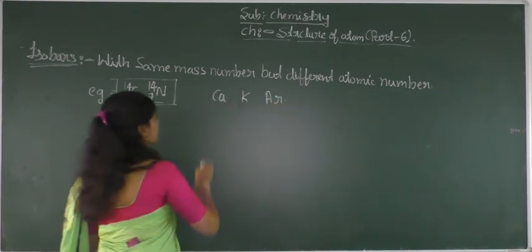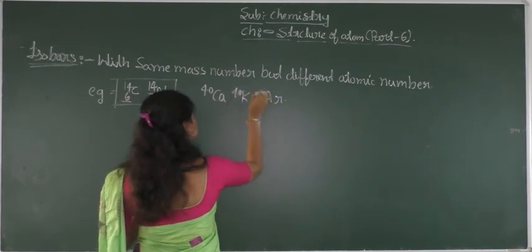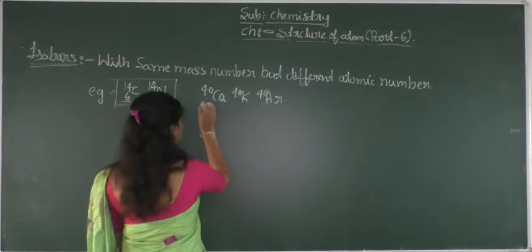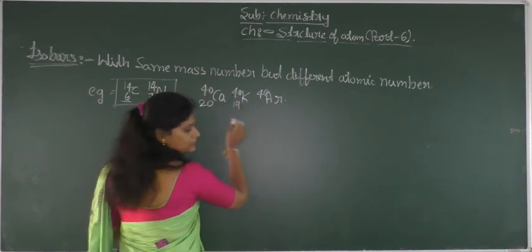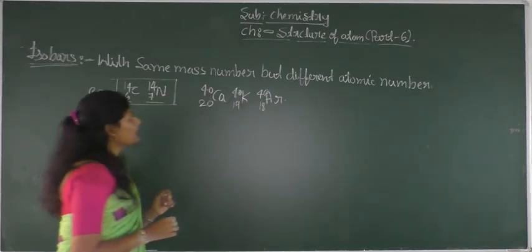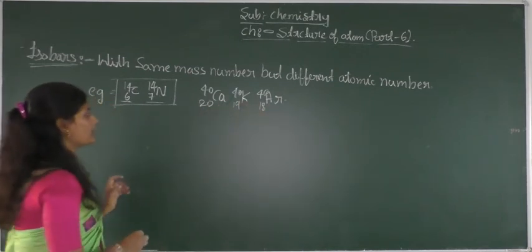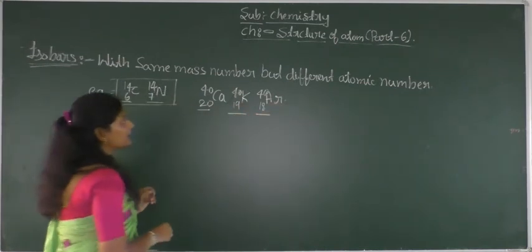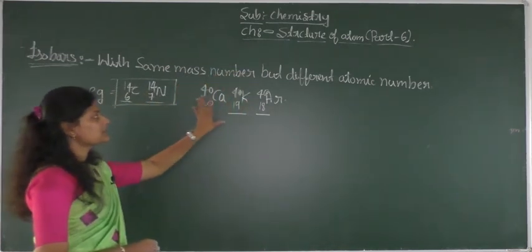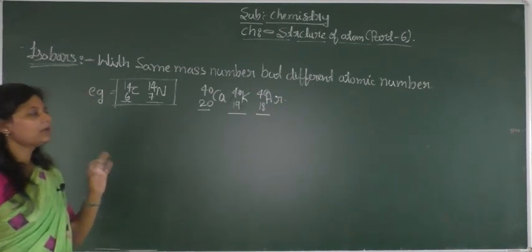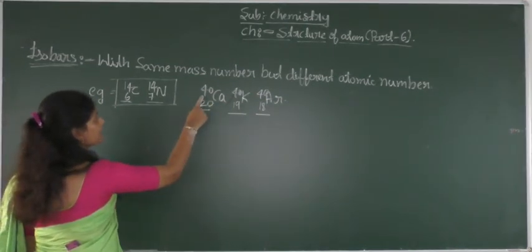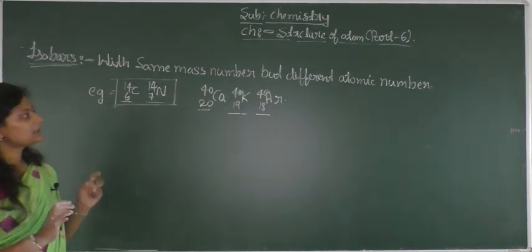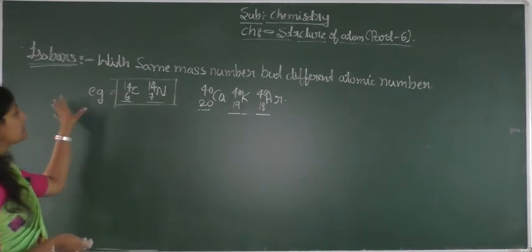Another example: potassium, calcium, and argon. Here the atomic number varies — calcium is 20, potassium is 19, and argon is 18. But the mass numbers are the same for all three. Such species are called isobars. Isobars are elements or species which have the same mass number.